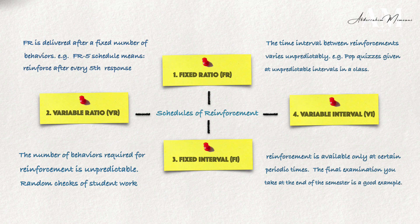Each schedule has its own effects on behavior, and the choice of schedule depends on the goals of the educator or the context in which the behavior is being modified. Fixed schedules tend to produce a steady rate of responding, while variable schedules tend to produce more consistent responding, as the uncertainty of when reinforcement will occur keeps the behavior persistent. Ratio schedules typically result in higher response rates than interval schedules.